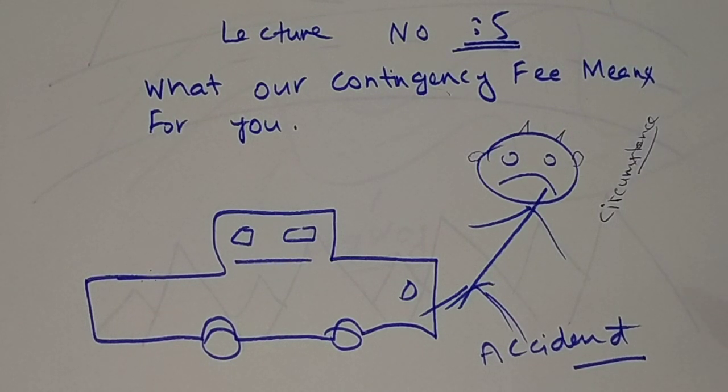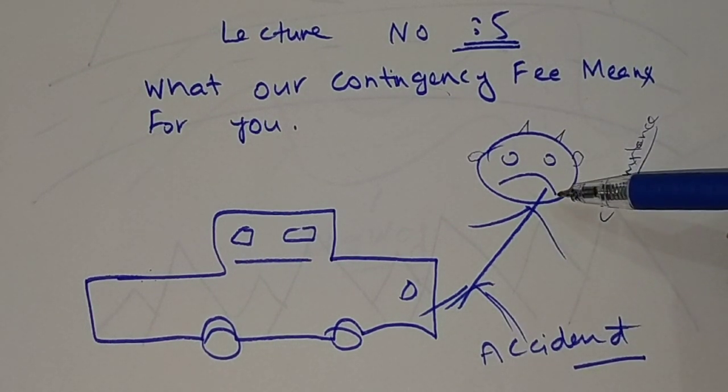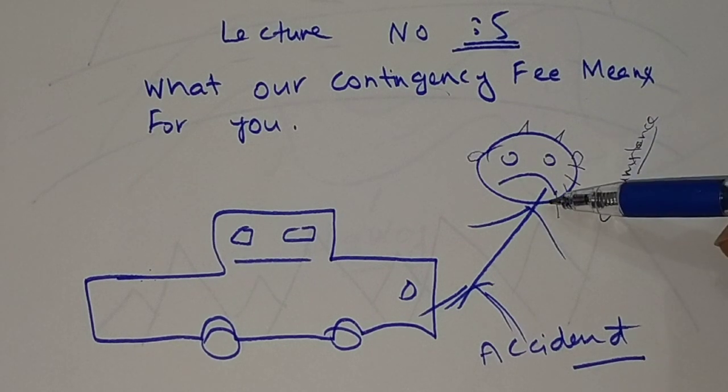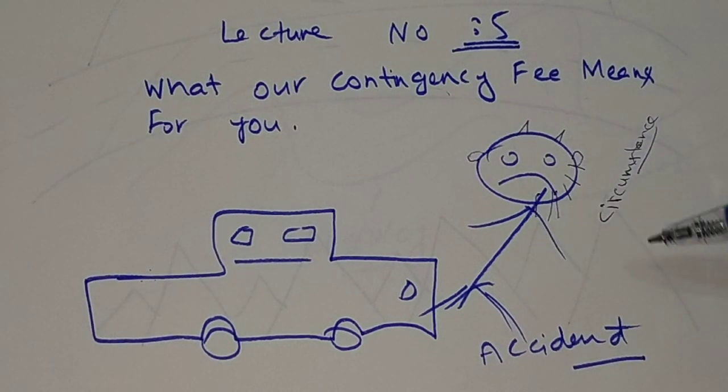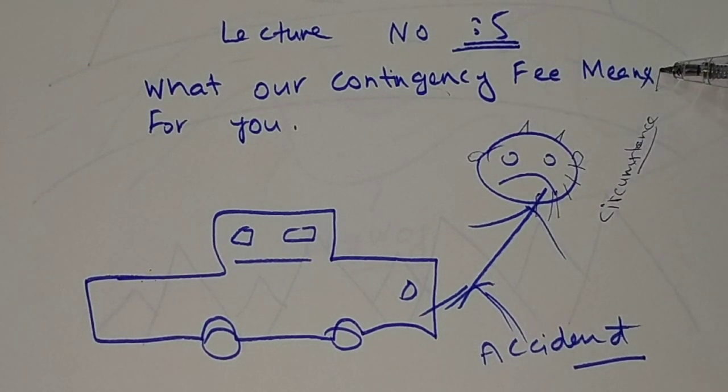The things that we have to keep in mind is about to understand. This is lecture number five and the main heading of the lecture is what our contingency fee means for you. The contingent fee is the accidental fee which is payable without any kind of doubts.